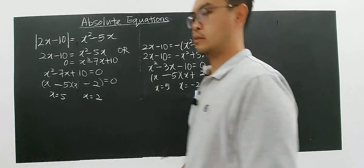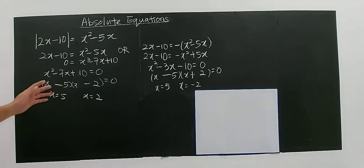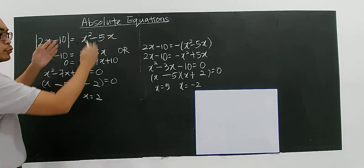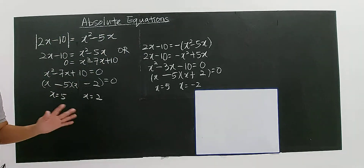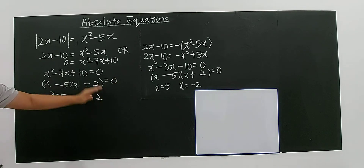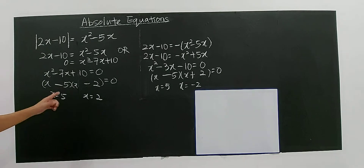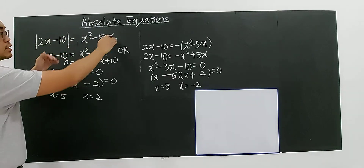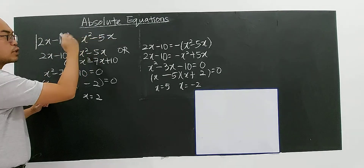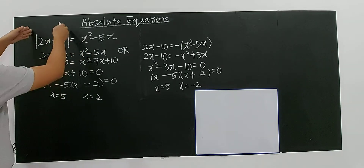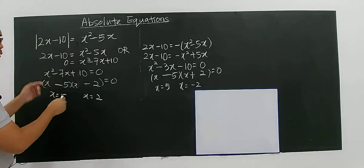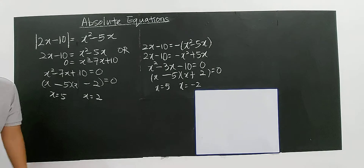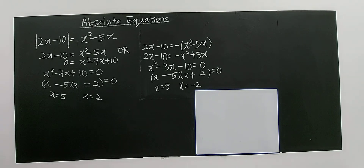Now let's do some checking. When a modulus function equals a positive constant, all solutions will always satisfy the equation. But in this case, modulus of a function equals another function — which is not a constant — so the right-hand side may be negative. Since modulus can never be negative, any solution that gives a negative right-hand side must be rejected.